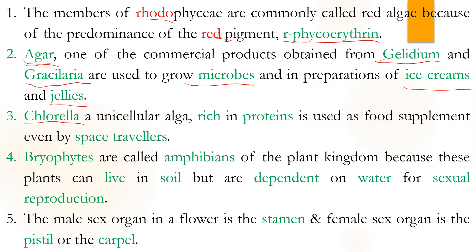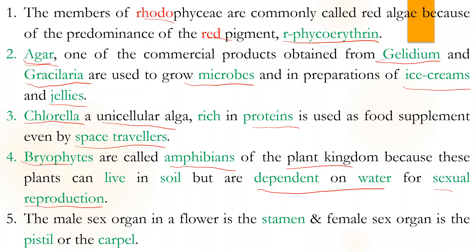Chlorella is a unicellular alga which is rich in protein, so space travellers take it with them — it keeps growing and they keep eating it. Bryophytes are called the amphibians of the plant kingdom, because they live on land but are dependent on water for sexual reproduction.